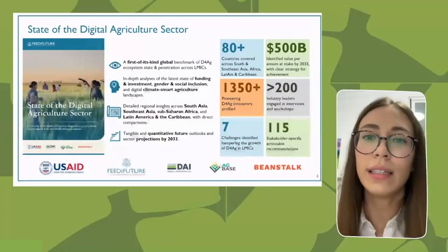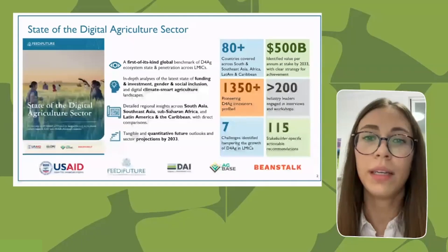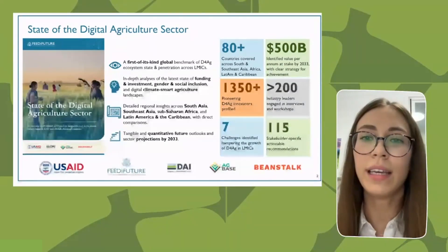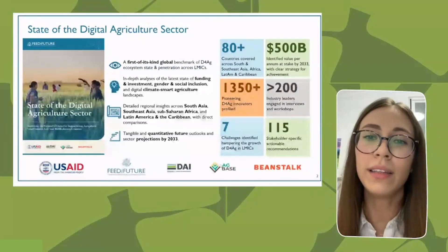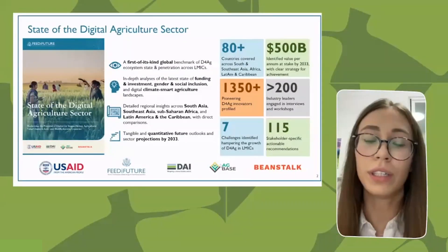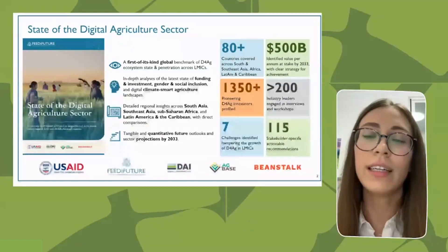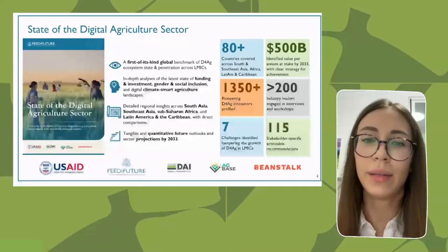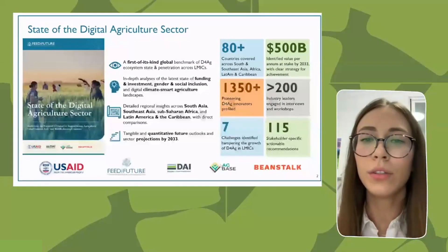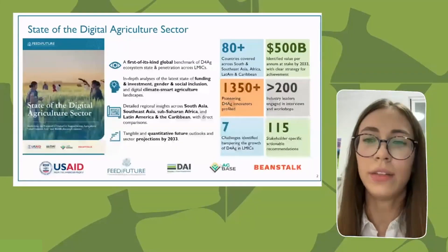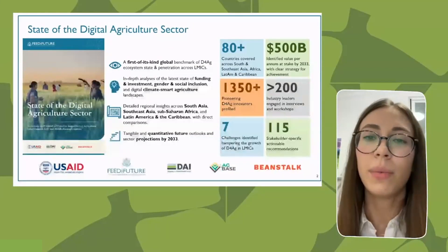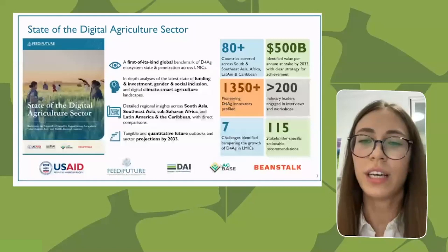This report is a global benchmark of the state of the digital ag ecosystem in low and middle income countries. The baseline came from the CTA Digitalization of African Agriculture 2019 report, and we aim to update those findings and replicate the analysis at a global scale. We focused on four regions: South Asia, Southeast Asia, Sub-Saharan Africa, and Latin America and the Caribbean, drawing direct comparisons between them. The report provides quantitative sector projections up to 2033.